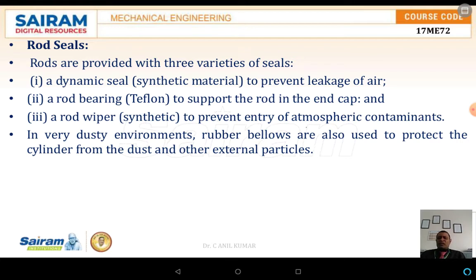The materials also vary for each type. For the dynamic seal, synthetic materials are used to prevent leakage of air. For the rod bearing, Teflon is used because it must support the rod and the end cap. For the rod wipers, synthetic materials are used to prevent entry of atmospheric contamination. In very dusty environments, rubber bellows are also used to protect the cylinder from dust and other external particles.